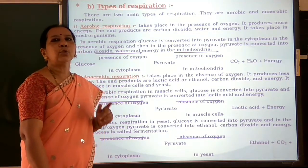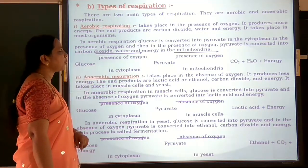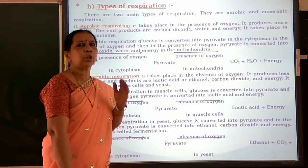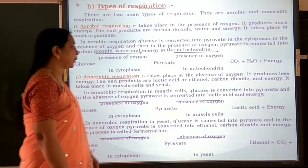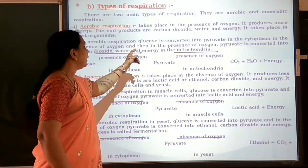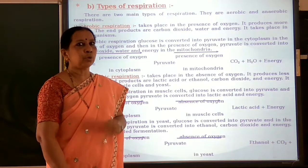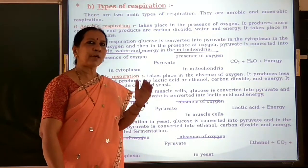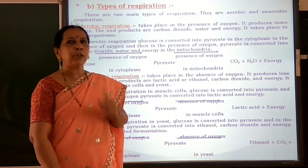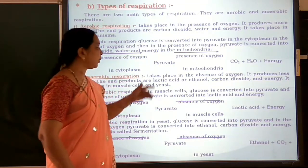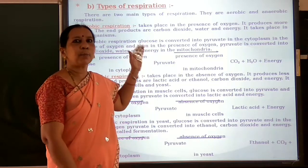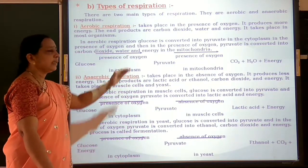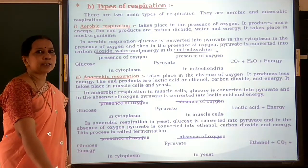In aerobic respiration, glucose is converted into pyruvate in the cytoplasm. A six-carbon molecule, glucose, is converted into three-carbon molecules called pyruvate in the presence of oxygen in the cytoplasm. Then in the presence of oxygen, pyruvate gets converted into three molecules of carbon dioxide, water and energy in the mitochondria. The further breakdown of pyruvate into energy takes place in mitochondria using oxygen during aerobic respiration.